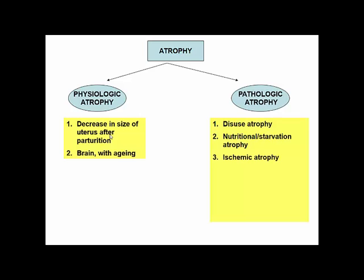The third is ischemic atrophy. Ischemia is a decrease in blood supply due to some occlusion. Whenever there is decreased blood supply, it results in progressive loss of blood supply to that tissue and then progressive cell loss. For example, in atherosclerosis, vessels are narrowed and may not provide adequate blood supply to the brain, causing the brain to undergo progressive atrophy.